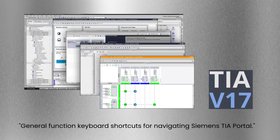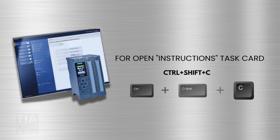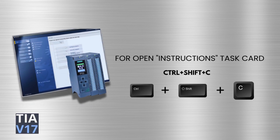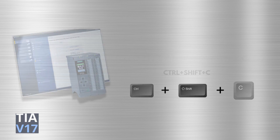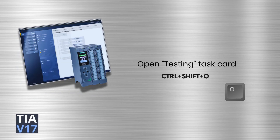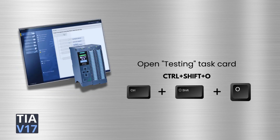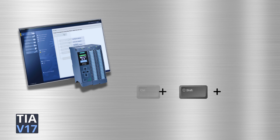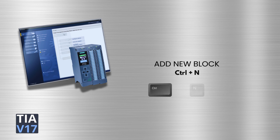General function keyboard shortcuts for navigating Siemens TIA Portal. To open the Instructions Task Card, the shortcut key is Ctrl plus Shift plus C. To open the Testing Task Card, the shortcut key is Ctrl plus Shift plus O.